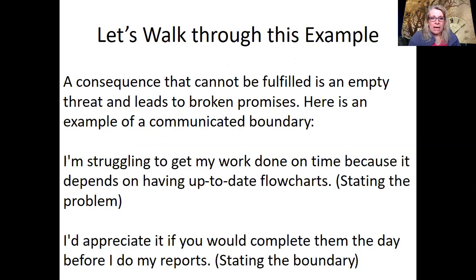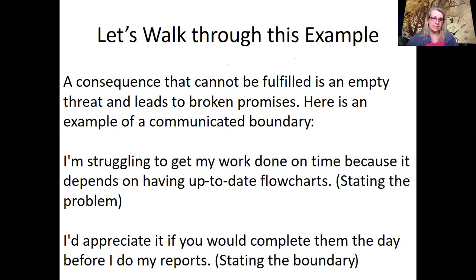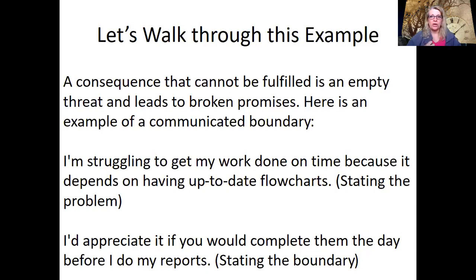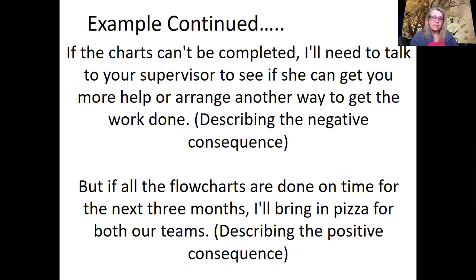Let's walk through this example. A consequence that cannot be fulfilled is an empty threat and leads to broken promises. Here's the example: 'I'm struggling to get my work done on time because it depends on having an up-to-date flow chart.' This is stating the problem — it's about working in a team environment. Now you want to state the boundary: 'I'd appreciate it if you would complete them the day before I do my reports.' This sets the boundary for when things need to be done and lets people know it's affecting your work. Then: 'If the charts can't be completed, I'll need to talk to your supervisor to see if she can get you more help or arrange another way to get the work done.'